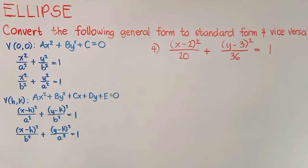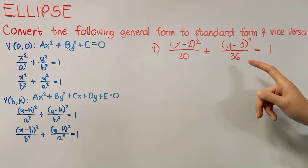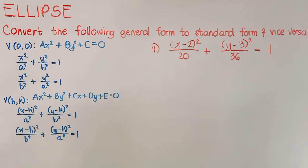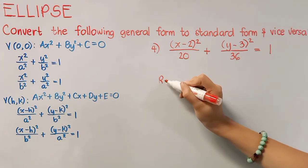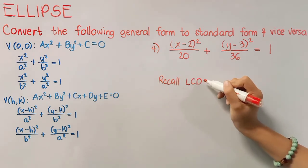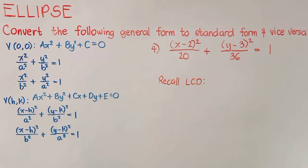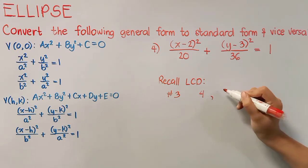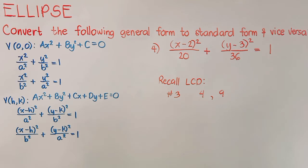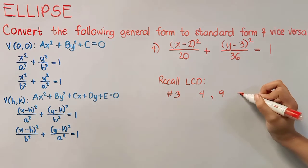Let us now proceed to the next item. As you can see, this is still in standard form with vertex hk. 36 is our a squared while 20 is our b squared, therefore our given is actually in this standard form. Our goal is to come up with this general form. To do that, we have to remove all of the fractions by multiplying by the LCD. Recall that in the previous item our denominators were 4 and 9, and since they had no common factor, the LCD was simply their product.